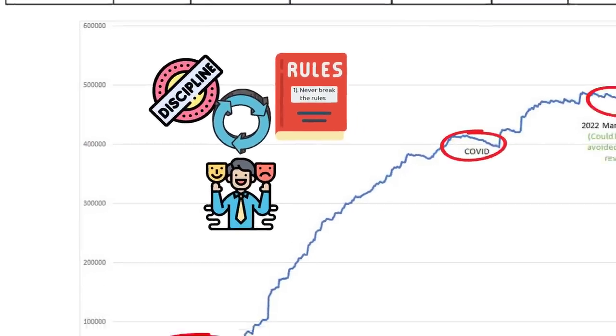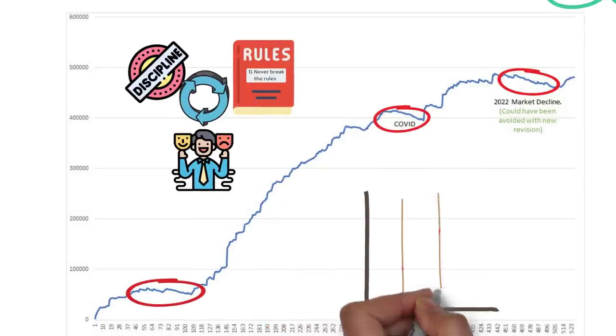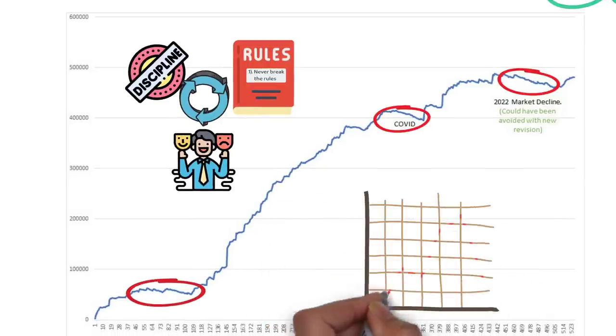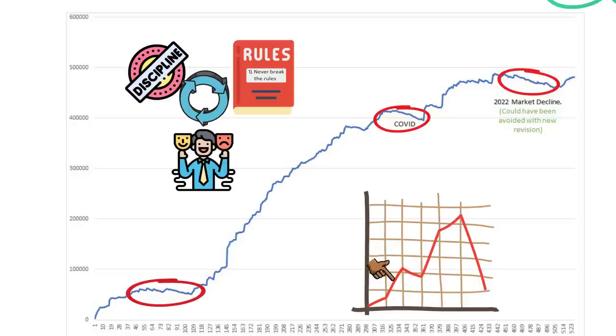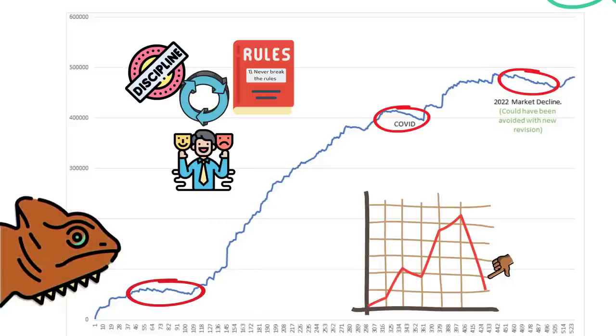Another point to consider here is that the success rate will also fluctuate based on the overall condition of the market. Long positions will have a better chance of success in a bull market, and shorts will have a better chance of success in bear markets. Therefore, you should adapt your approach to the changing market environment.